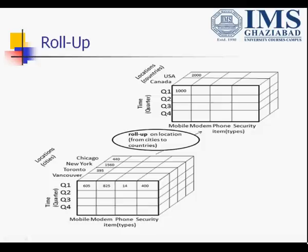The first operation is roll-up. Roll-up is used to summarize data from one dimension to another dimension. We can perform a roll-up operation on location from cities to country. In the lower half we can see there are four cities — Vancouver, Toronto, New York, and Chicago — and we combine these cities into countries: USA and Canada. Toronto and Vancouver are summarized as the country Canada, and Chicago and Newark are combined into the USA. In the upper half there are now two countries, USA and Canada, which result from performing the roll-up operation on the data cube.